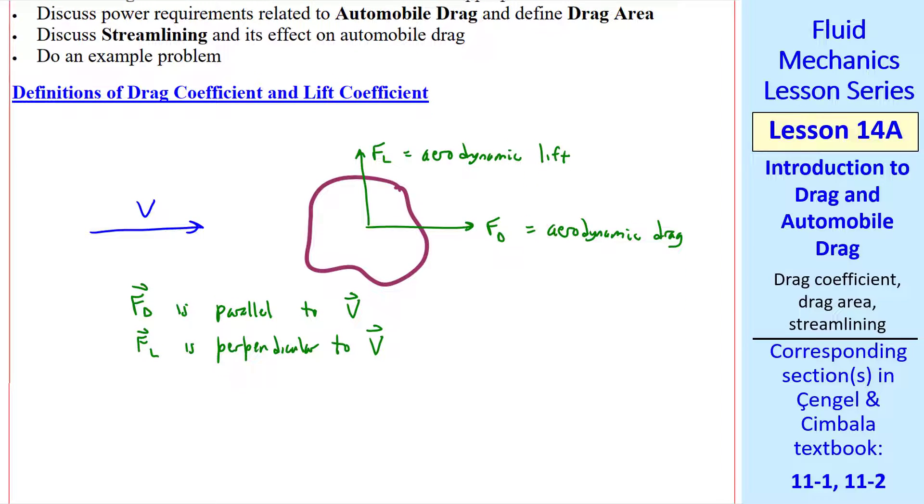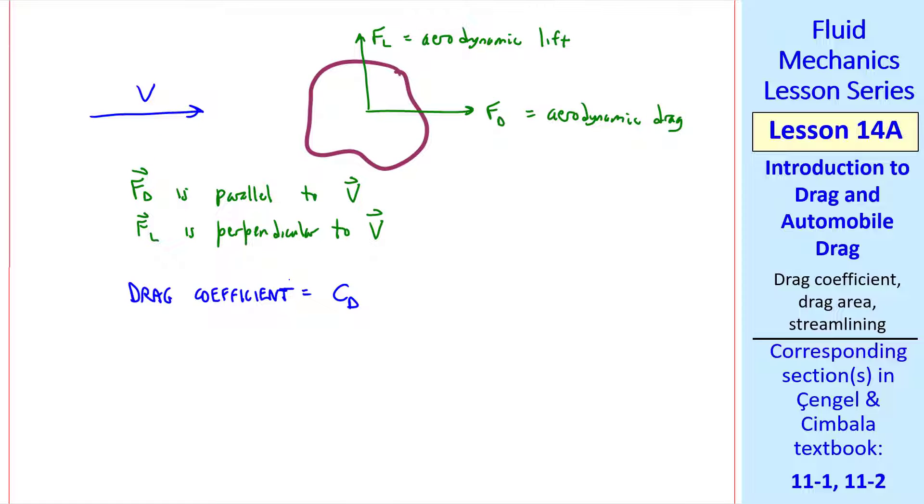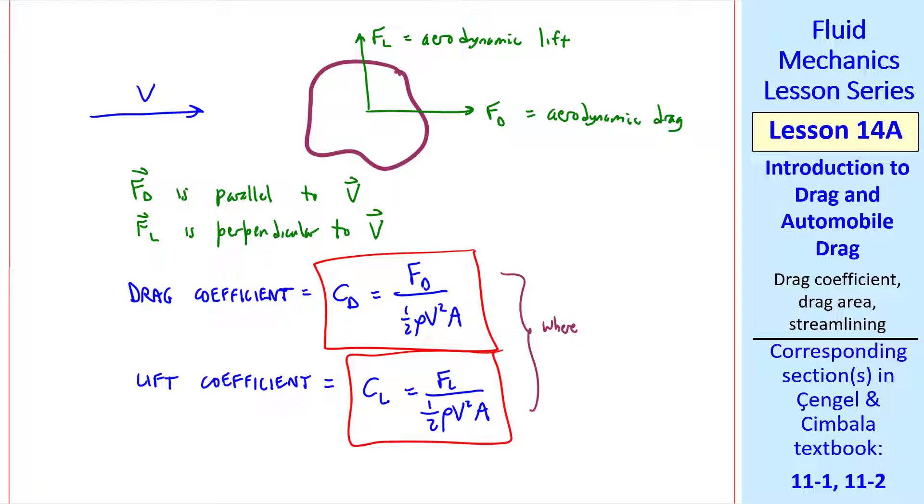As previously discussed, we can define a drag coefficient and lift coefficient. The drag coefficient is C sub d, and it's equal to Fd over one-half rho v squared A. Lift coefficient C sub l is defined the same way except with Fl instead of Fd, where for either of these cases, A is an appropriate area.